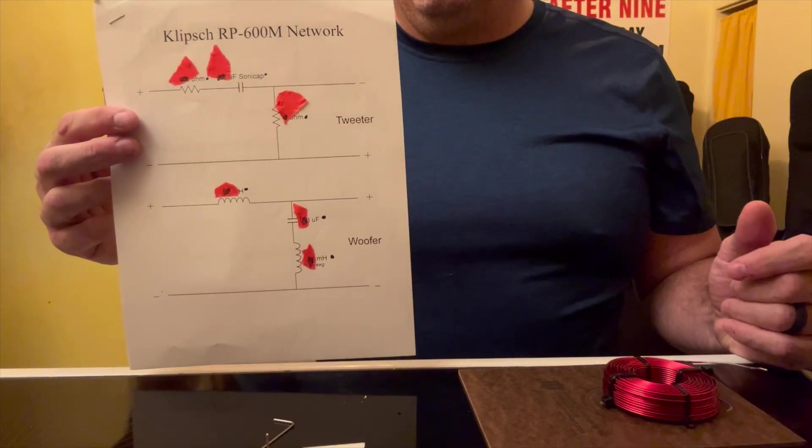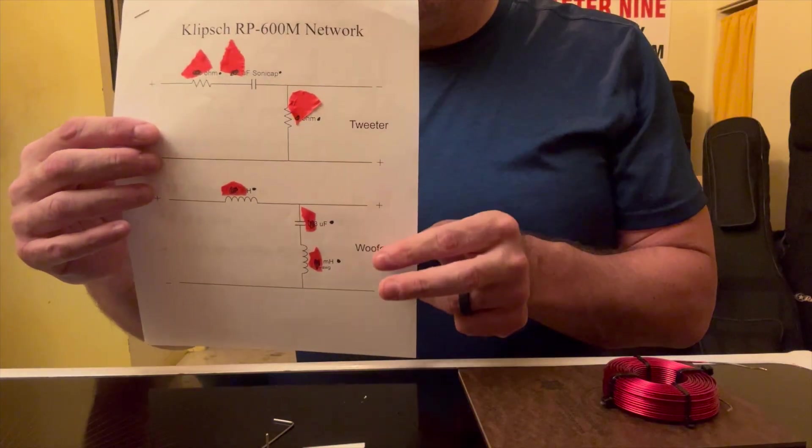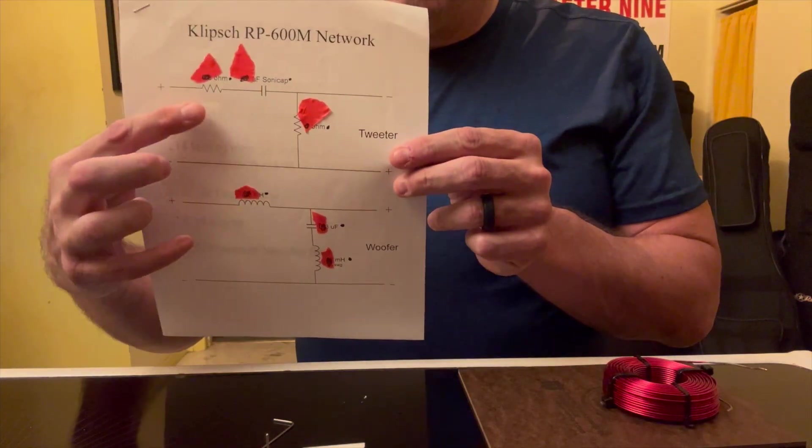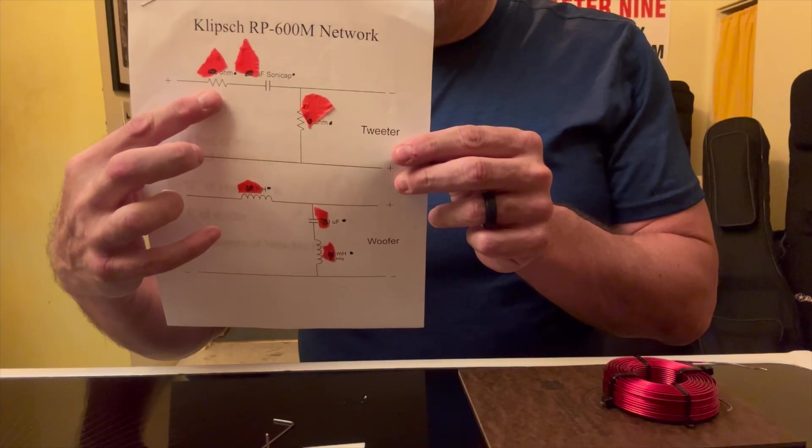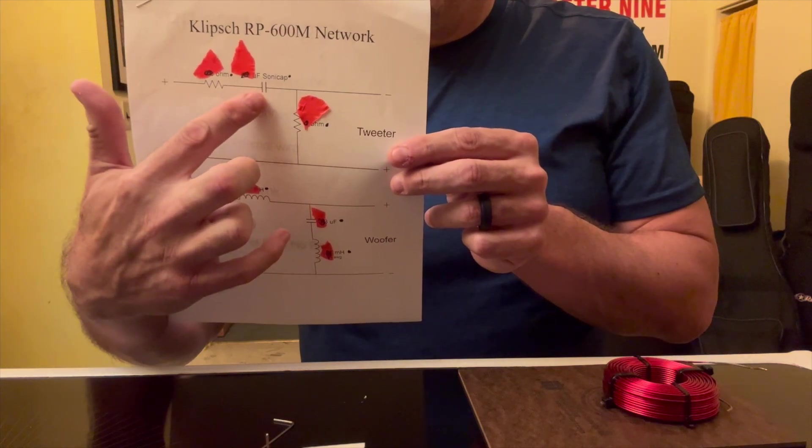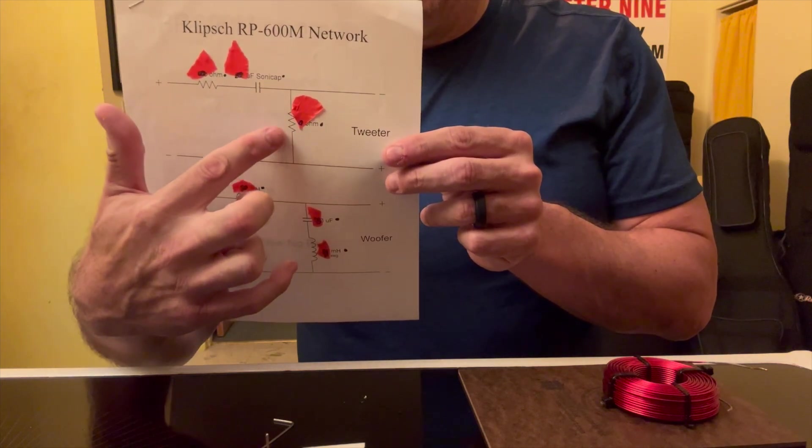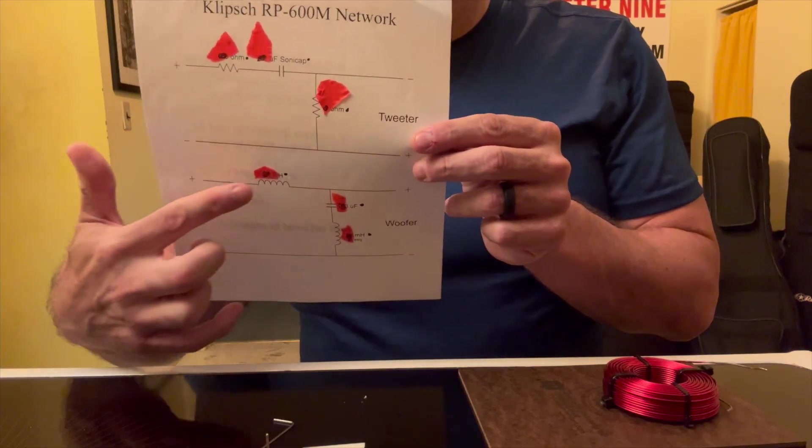It outlines what's going on for both the tweeter and the woofer. That squiggly angled thing is a resistor, that thing that looks like a gap is a capacitor, and that is another resistor. That's your tweeter network.